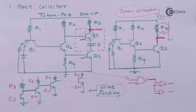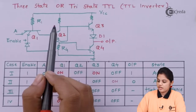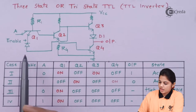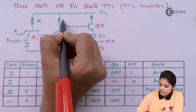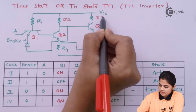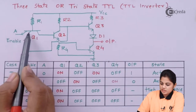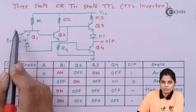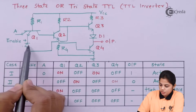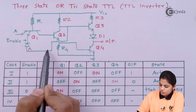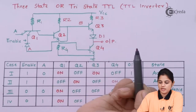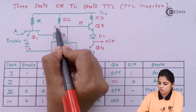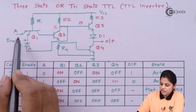Fanout is possible with open collector, so the drawback of totem pole configuration is overcome. The next configuration is the tri-state. In the tri-state diagram the circuit is similar, with resistances R2 and R3, but one terminal is used as input A for the multi-emitter transistor, and a second input is connected to a diode whose anode is connected to the base of transistor Q3, or the collector of transistor Q2. We will now see how this diode plays a role.